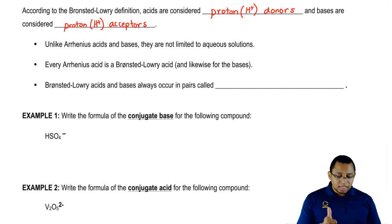Now we're going to say that Bronsted-Lowry acids and bases are always occurring in pairs, which we call conjugate acid-base pairs.